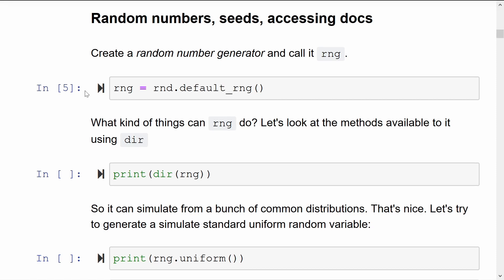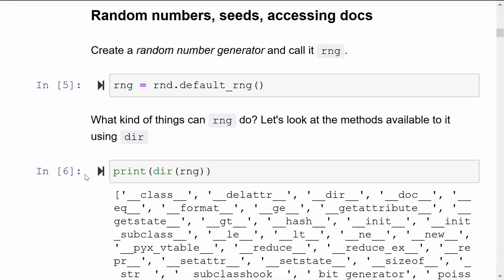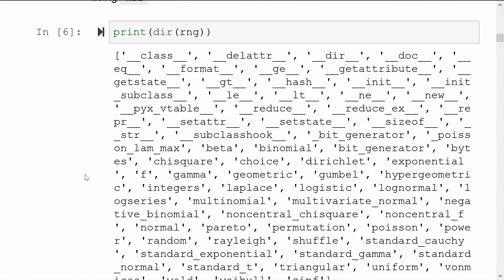We use the rnd.default_rng function to create our random number generator object. To look at the kind of things that this object can do, I use the dir function, which is built into Python and you can run dir on any object. What it does is it shows you all the methods that are available for an object.